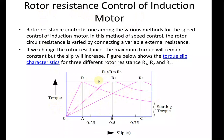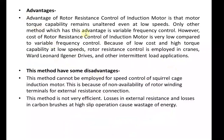The main advantage of this method is that the motor torque capability remains unaltered or unchanged even at low speeds — torque is constant. The cost of this method is very low as compared to the variable frequency drive. Because of this low cost and high torque capability at low speeds, it is employed in applications requiring high starting torque, such as cranes, different drives, and other intermittent load applications.